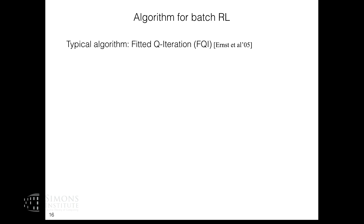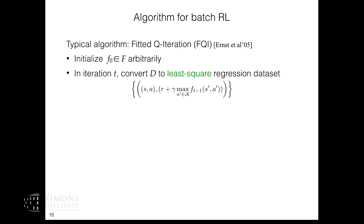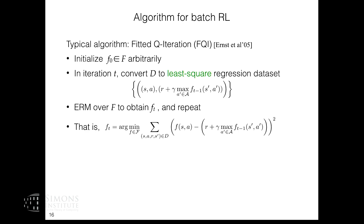The particular algorithm I'll consider is fitted Q-iteration (FQI). Briefly: you initialize your function F arbitrarily, and every iteration you convert your RL dataset into a least-squares regression dataset where the input is the state-action pair and the output depends on the function from the previous iteration — the empirical Bellman update. You do ERM over this dataset using your function class, get the next iterate, and repeat.